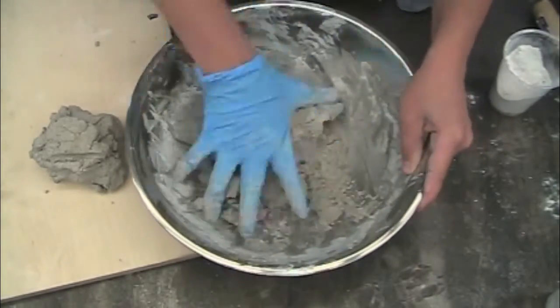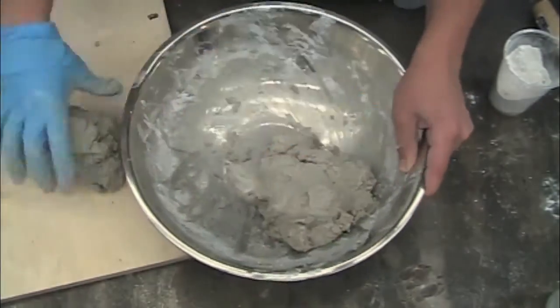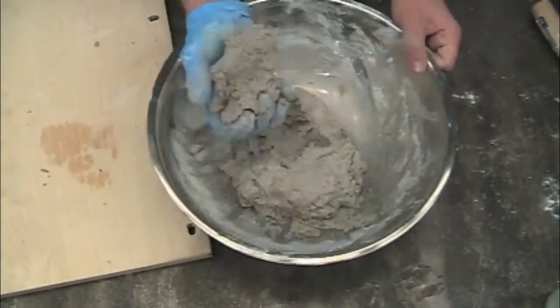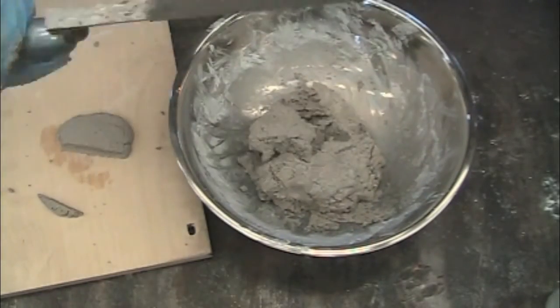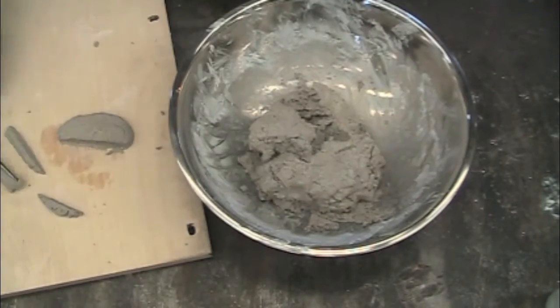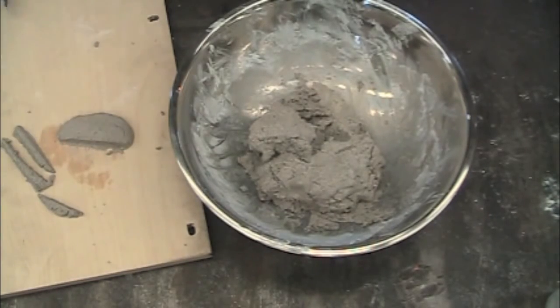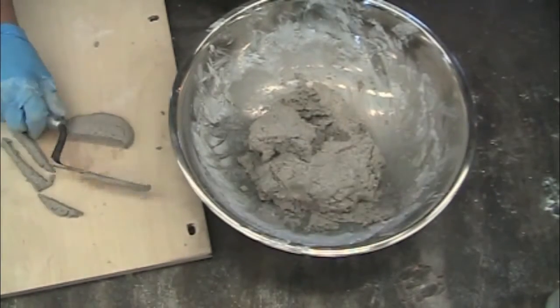Pure lime mortar is not as hard as mortars containing cement and allows softer historic brick to expand and contract over time without causing spalling or damaging the brick. I'd be really happy repointing with this mortar. It's really easy to scoop up and place in a wall.